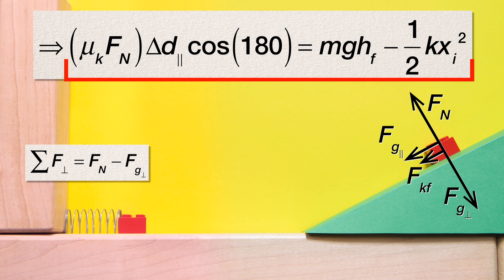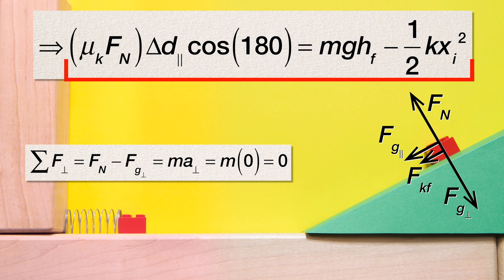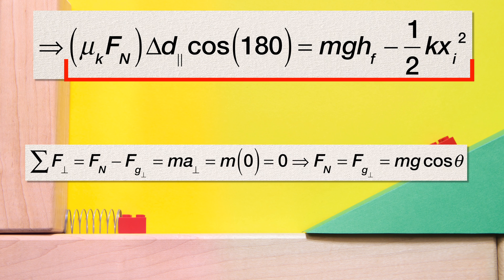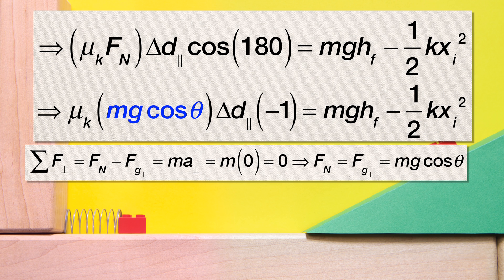The net force in the perpendicular direction equals force normal minus force of gravity perpendicular, and the net force in the perpendicular direction also equals mass times the acceleration in the perpendicular direction. The block isn't moving perpendicular to the incline, so the acceleration perpendicular is zero, and therefore the force normal equals the force of gravity perpendicular, which equals mass times acceleration due to gravity times the cosine of the incline angle, which we can substitute back into the equation in our equation holster.